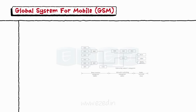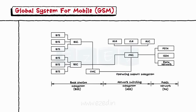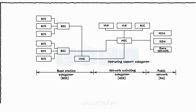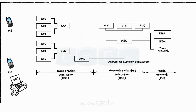The architecture of this GSM network is as shown. Mobile Station: MS is nothing but the device used for communication, such as a cell phone, fax machine, etc.